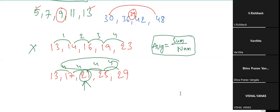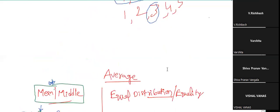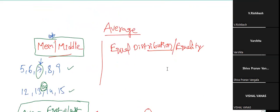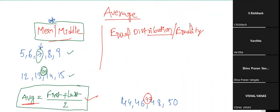So till now we have completed the mean or middle concept. We have also done the equal distribution concept — a small point was completed. Now see the equal distribution concept again.